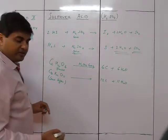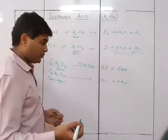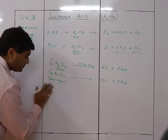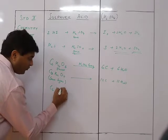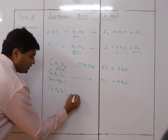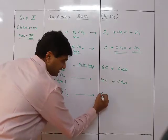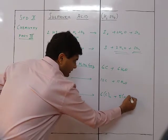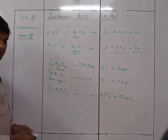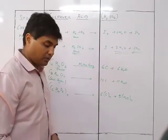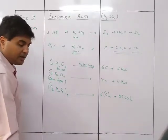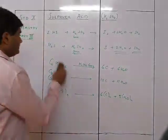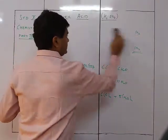Cellulose (C₆H₁₀O₅)ₙ reacted with concentrated H₂SO₄ also gives 6C + 5H₂O per unit (same type of dehydration). Wood and paper behave similarly. These dehydration reactions with carbohydrates will also appear in the organic chemistry chapter.